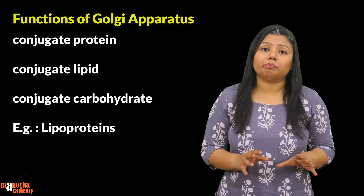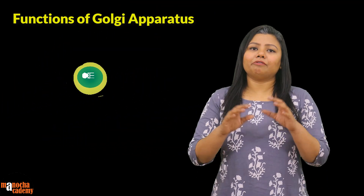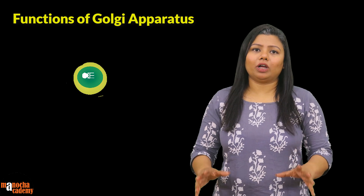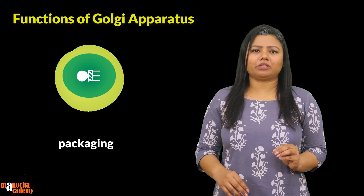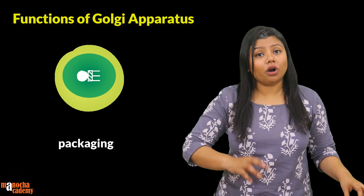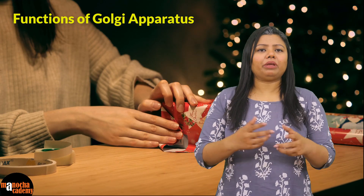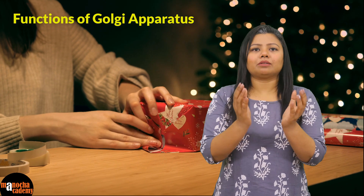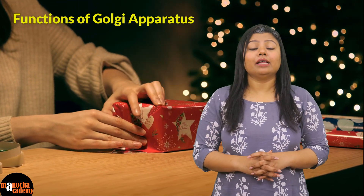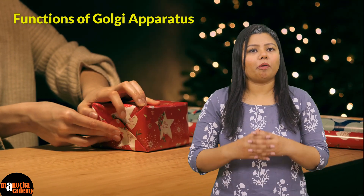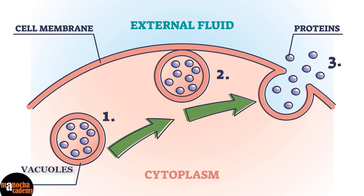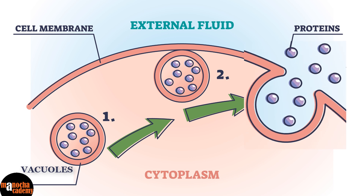Once modification is complete, the proteins are packed in vacuoles — this is the packaging function of the Golgi apparatus. All substances which either need to remain inside the cell or be secreted out are packaged inside a vacuole, just like we gift wrap our gifts. Similarly, these matured proteins, carbohydrates, and fats get packaged in a membrane to form a vacuole. Depending on the substance, it can either be stored inside the cell or the vacuole can fuse with the cell membrane and release it outside.